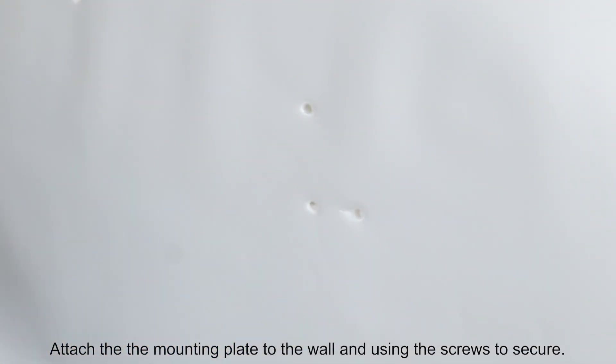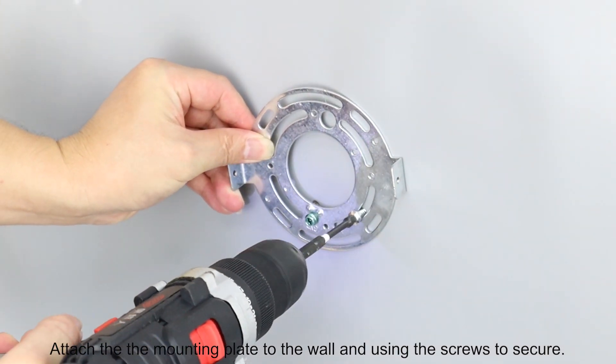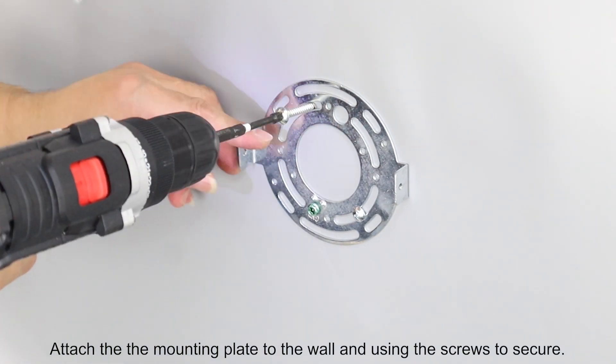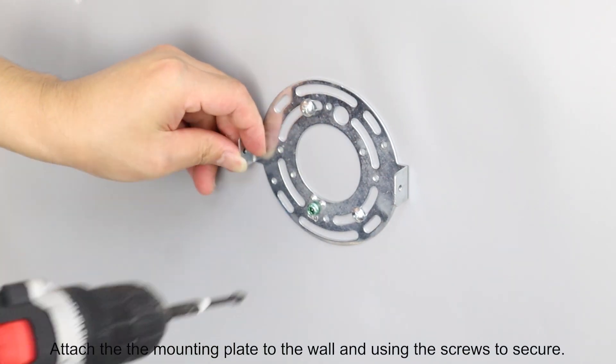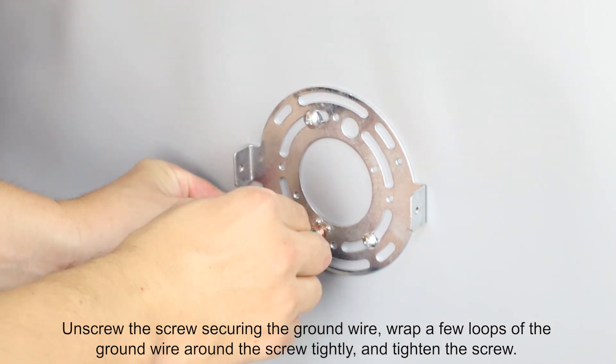Attach the mounting plate to the wall and use the screws to secure. Unscrew the screw securing the ground wire, wrap a few loops of the ground wire around the screw tightly, and tighten the screw.